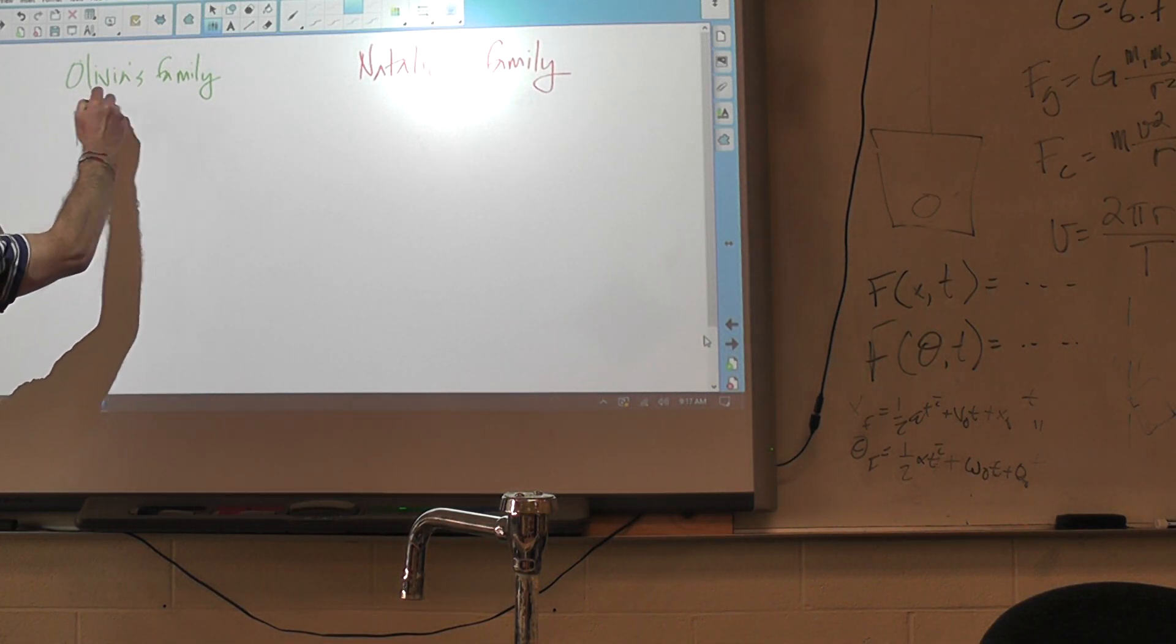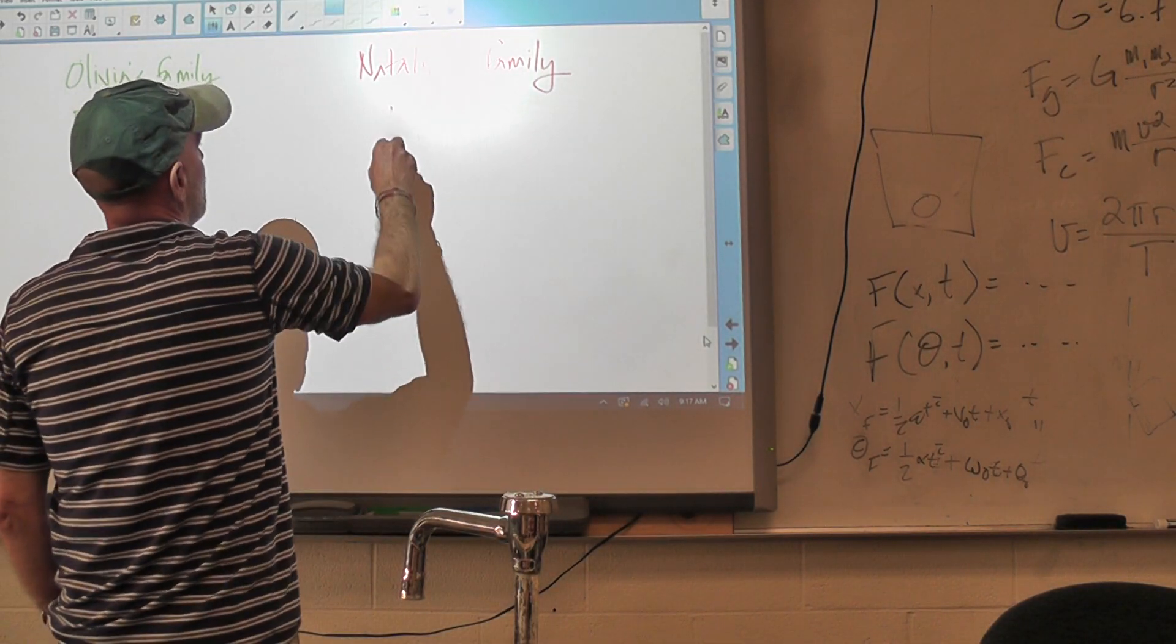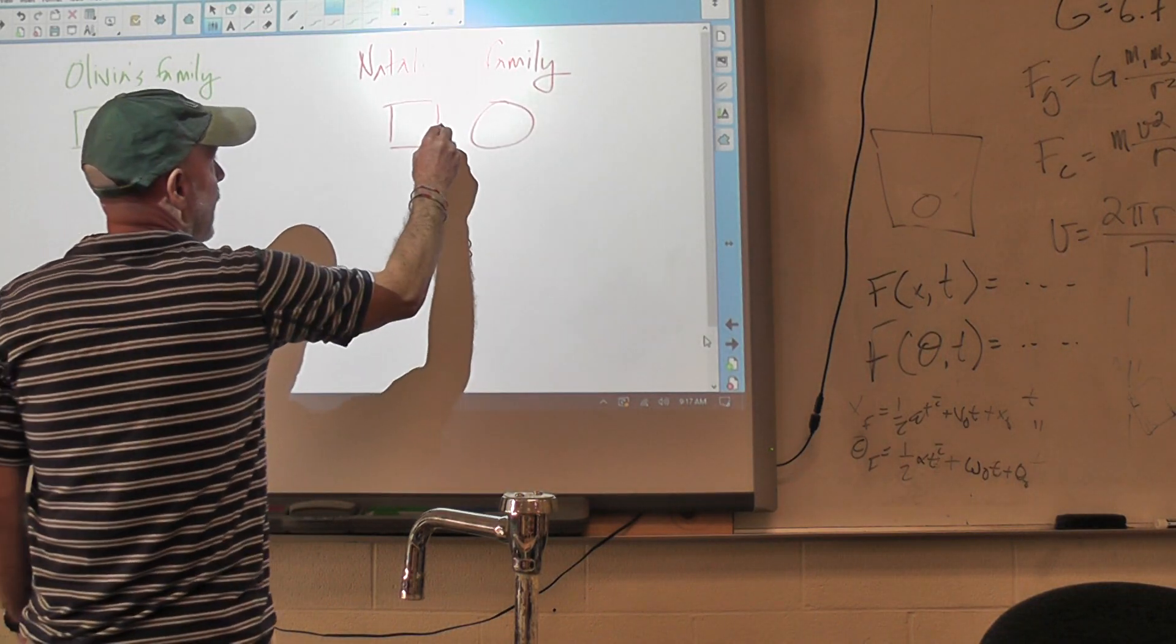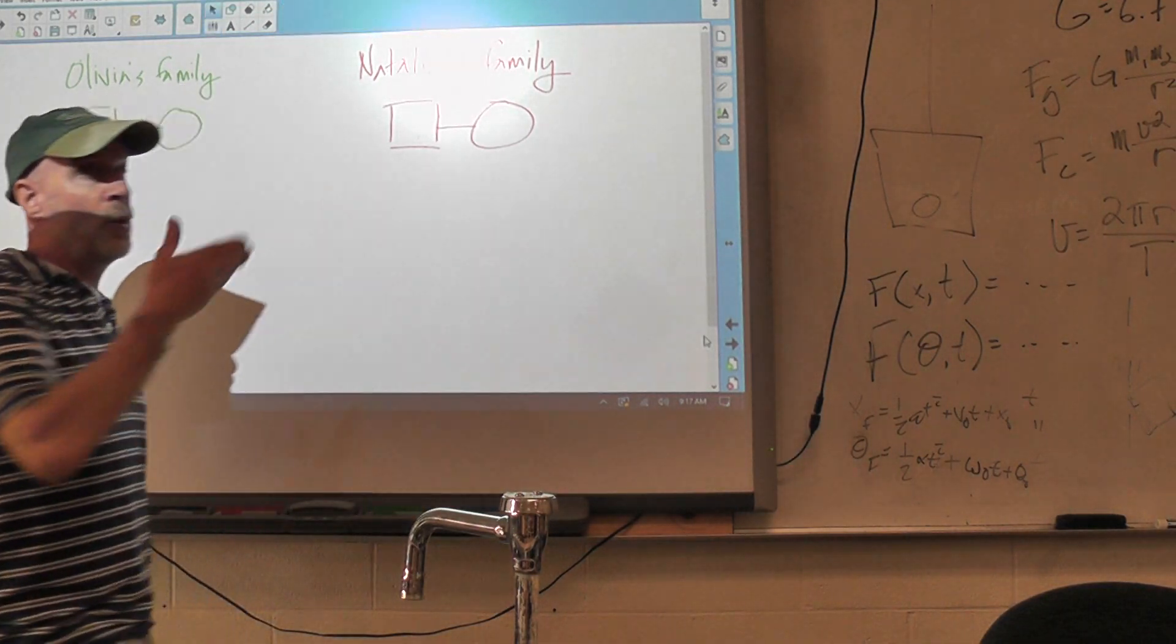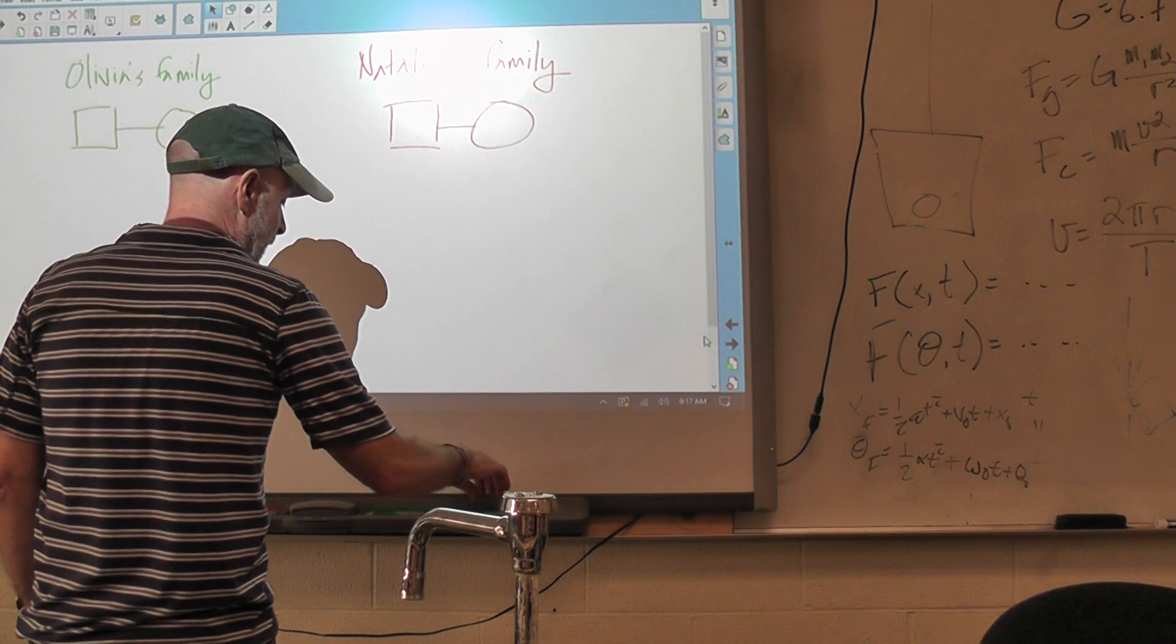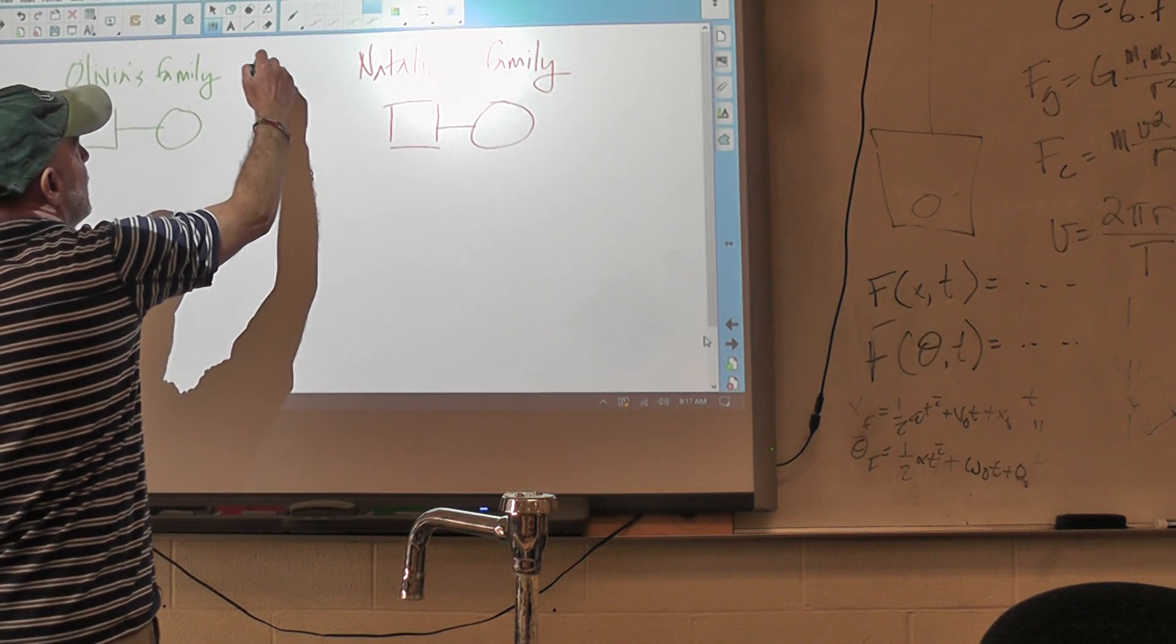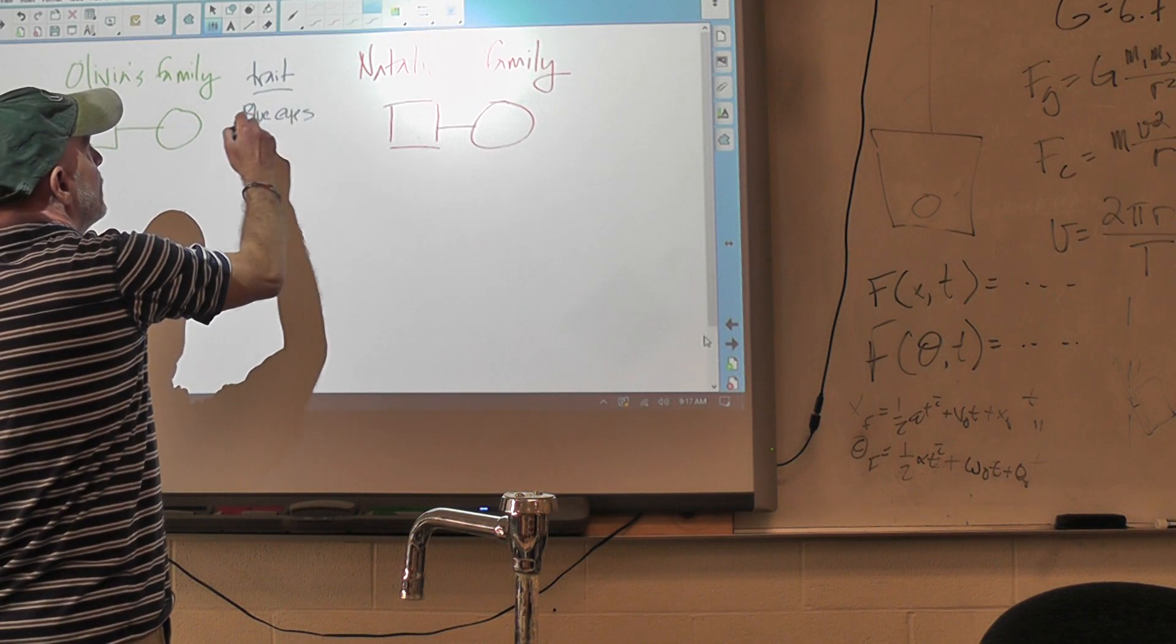So Olivia's family, we're going to look at her biological mom and dad. Natalie's family, we're going to look at her dad and mom. And these horizontal lines show that they reproduced, and they had these two kids. These are the only ones we're going to consider. And what we're going to do is we're going to be looking at the trait we're going to be investigating is blue eyes.